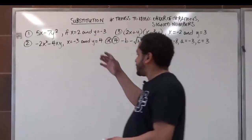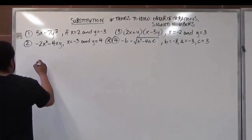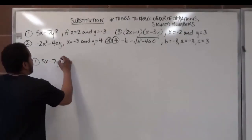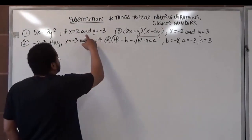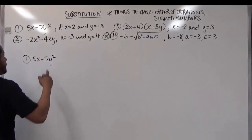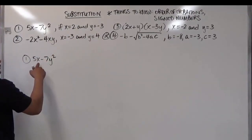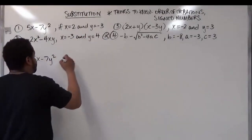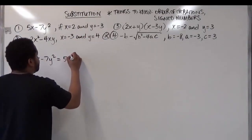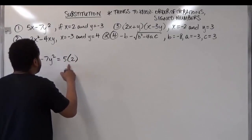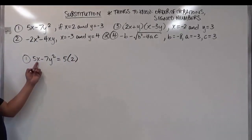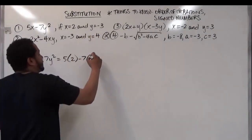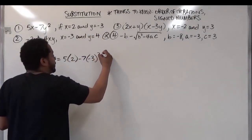Let's begin with the first problem. We have 5x minus 7y squared, where x equals 2 and y equals negative 3. So wherever we see an x we're going to substitute a 2, and wherever we see a y we're going to substitute a negative 3. We're using parentheses to substitute wherever the variable is, doing it for both variables. For the y value we have negative 3, substituting it in and squaring it.